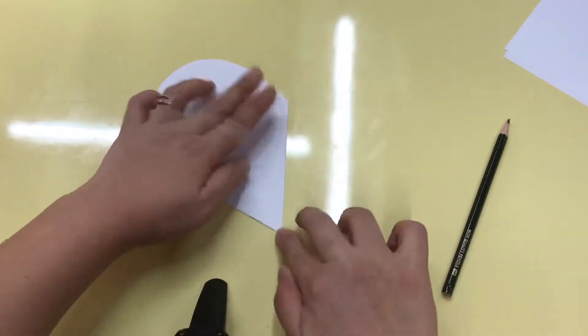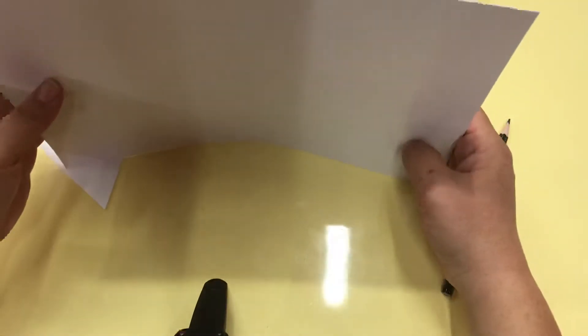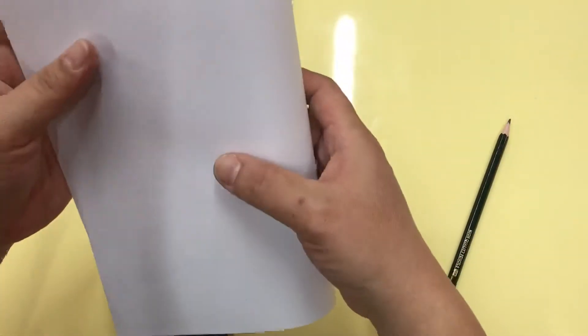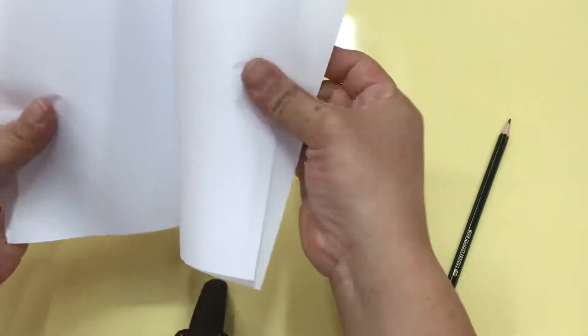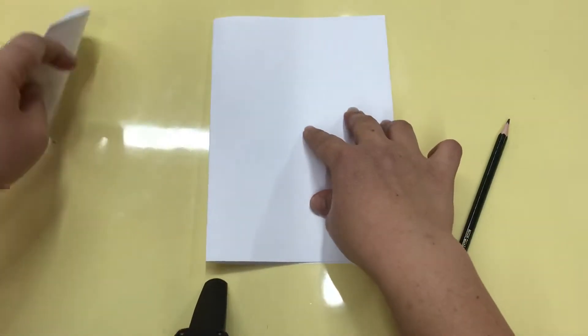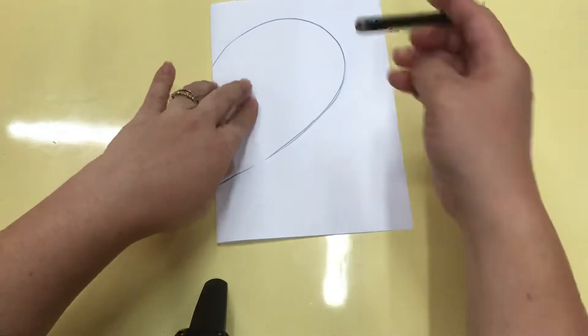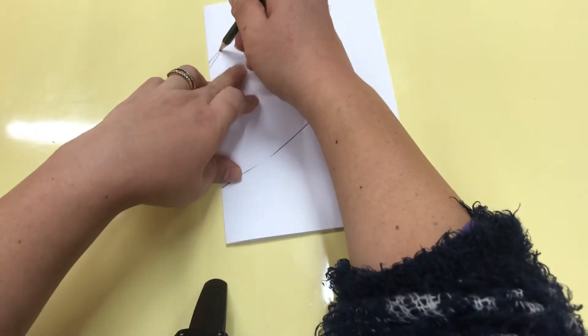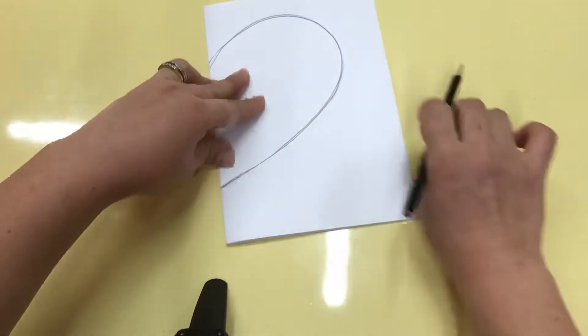So again, keep it folded. And the next two pieces of paper, remember, we want the same heart, so I want you to trace this heart. Draw, trace the heart so it's the same.